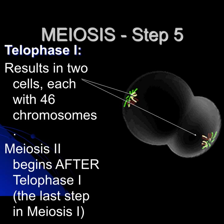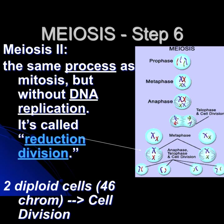We go from two cells down to four. In meiosis two, it's a very similar process to mitosis, but we don't have DNA replication because it's already happened. This is the reduction division. So two haploid cells with 46 chromosomes go down to four cells with 23. In the example here, because it was difficult to draw 23 chromosomes, we start with four, and when we go through this second phase we end up with four cells with two chromosomes in each.